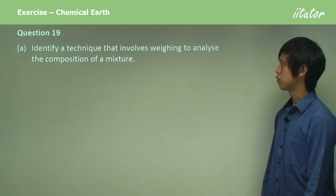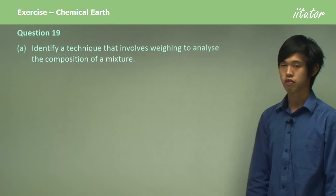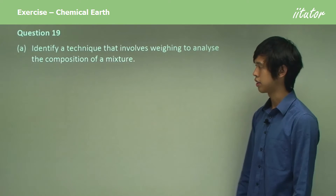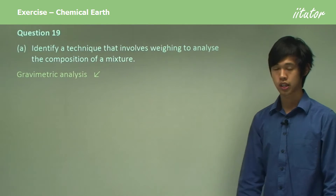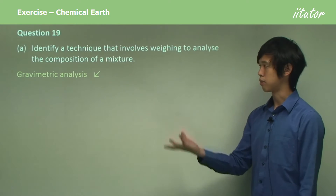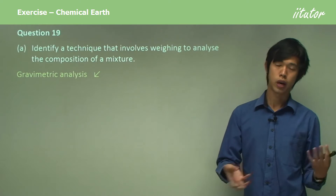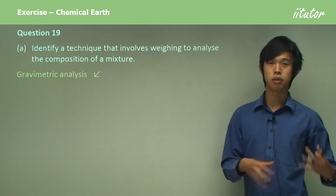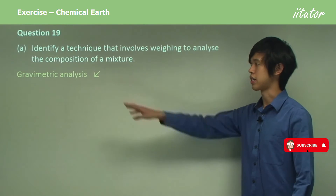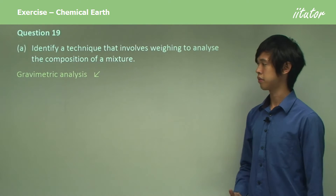Identify a technique that involves weighing to analyse the composition of a mixture. We call this gravimetric analysis. Whenever you weigh something, that's weighing weight, so it has something to do with gravity. That's why we say gravimetric analysis — that's how I remember it.